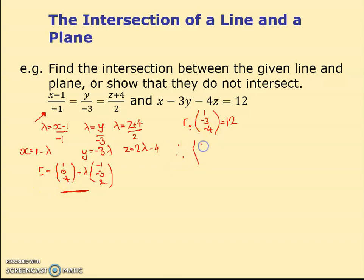So therefore, I've got (1 - λ, -3λ, 2λ - 4). That is being dotted by the (1, -3, -4). And the answer is 12. It's the same now as the question before, isn't it? So if we multiply this out like before and add them together, what do we get? 1 lot of that is 1 minus λ. Minus 3 times minus 3 is plus 9λ. And that's minus 8λ. Presumably plus 16 equals 12.